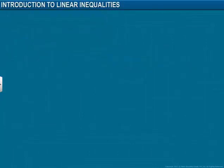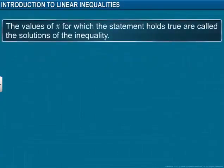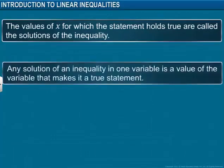Therefore, the values of x for which the statement holds true are called the solutions of the inequality. Any solution of an inequality in one variable is a value of the variable that makes it a true statement. The way the solutions were found for this inequality was by trial and error.